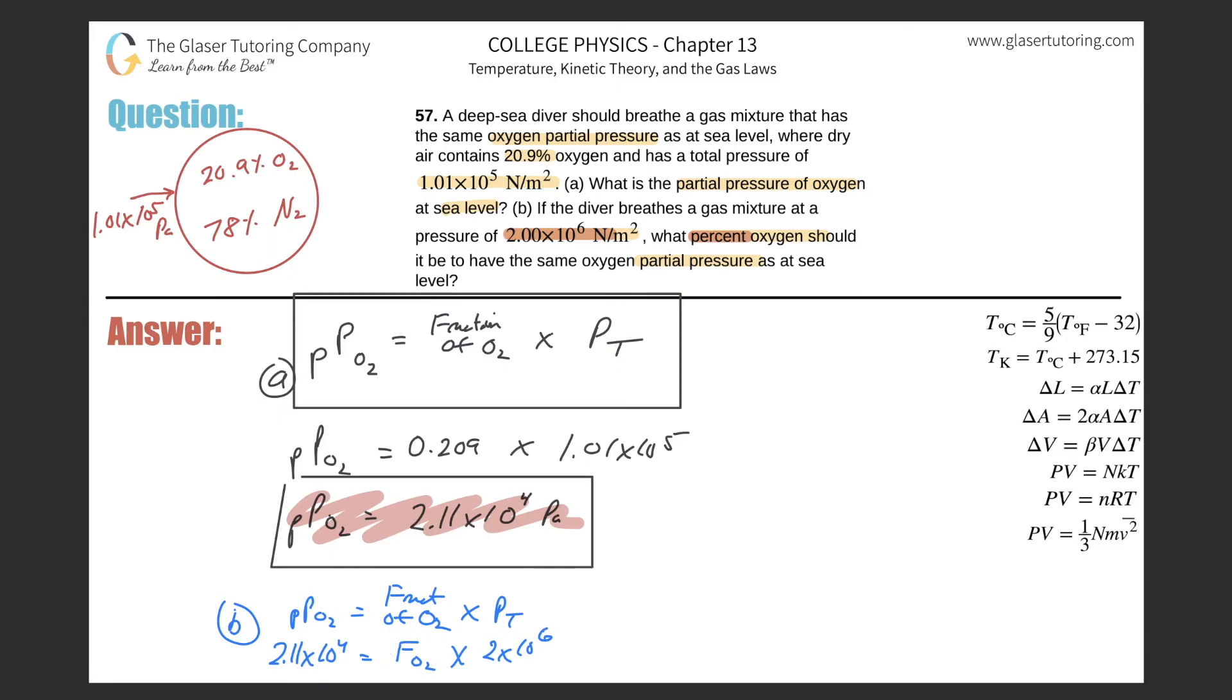All you have to do now, how do you solve for the fraction? All you have to do is divide this on out. You divide the 2.11 by 2 times 10 to the sixth. 2.11 times 10 to the fourth by 2 times 10 to the sixth. And let's do that.